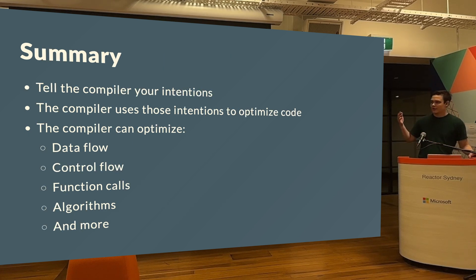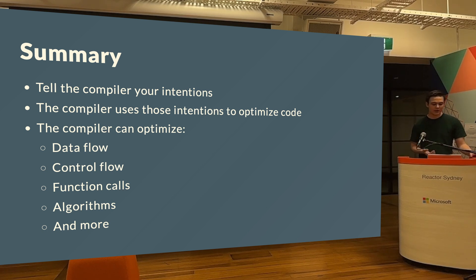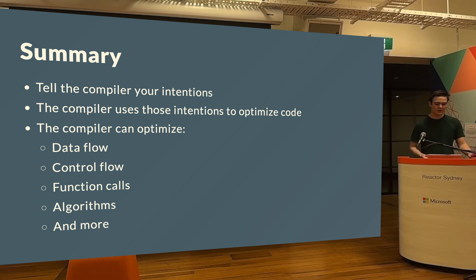In summary: tell the compiler your intentions, and the compiler will use those intentions to optimize your code. The compiler can optimize a massive range of things — data flow, control flow, function calls, algorithms, and much more.